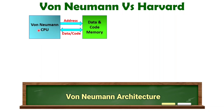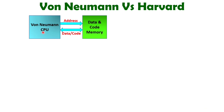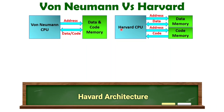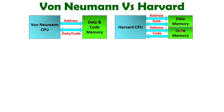In Von Neumann structure, when a Von Neumann CPU is there, you will have common memory for data and code. When you interface memory, data and code are stored in a common memory. When it comes to Harvard architecture, in a Harvard CPU, you will observe that data memory and code memory are different, and the system bus is also separate for data and code. In terms of interfacing, complexity is less with Von Neumann CPU, while with Harvard CPU, complexity is more because separate memories are present.